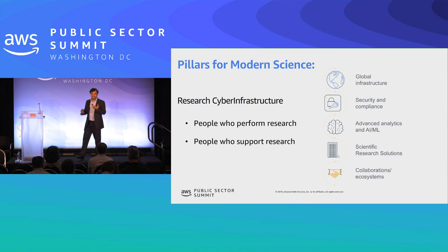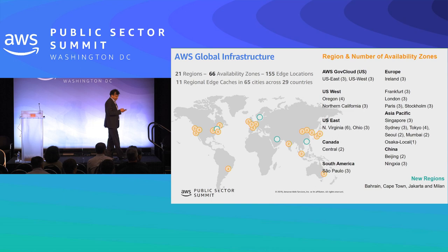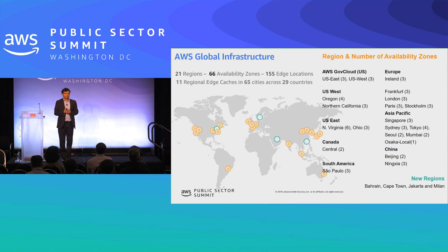Exactly the same thing we do at AWS. One of the things one can use from AWS is our global infrastructure — how can we use this to enable research collaboration? We have 21 regions, 66 availability zones, as well as 55 edge locations. One of the things I want to mention is what we can do together to create this infrastructure using what is already built here.